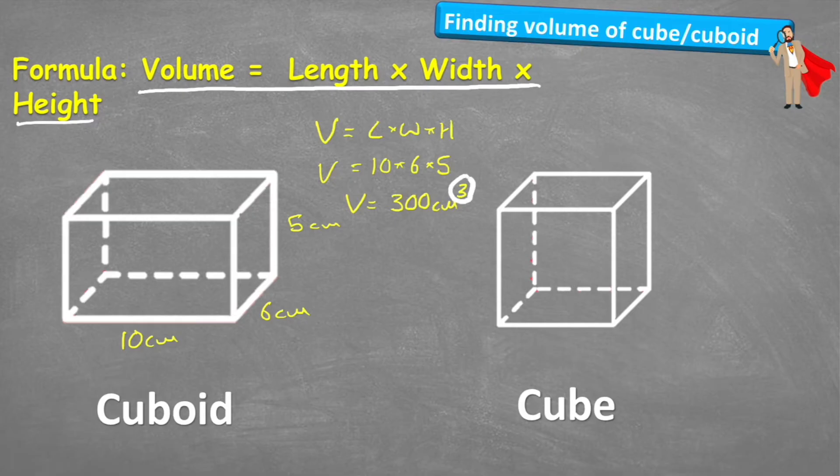So the volume of this cuboid is 300 centimetres cubed — it's cubed because volume is in 3D, so it's in three dimensions.